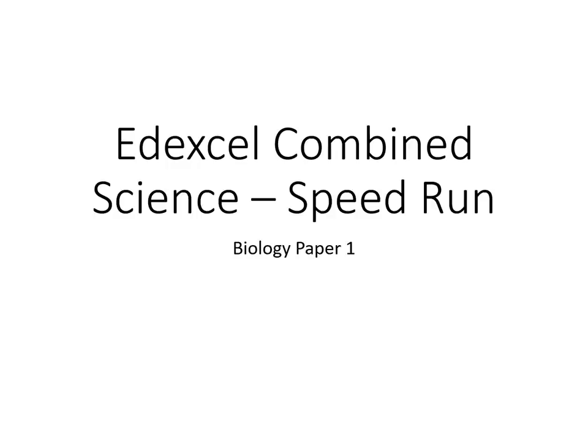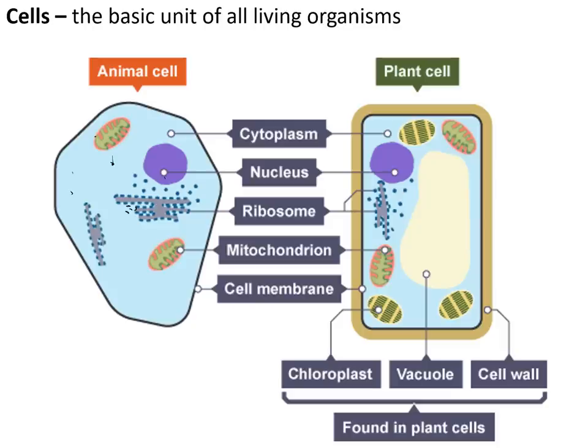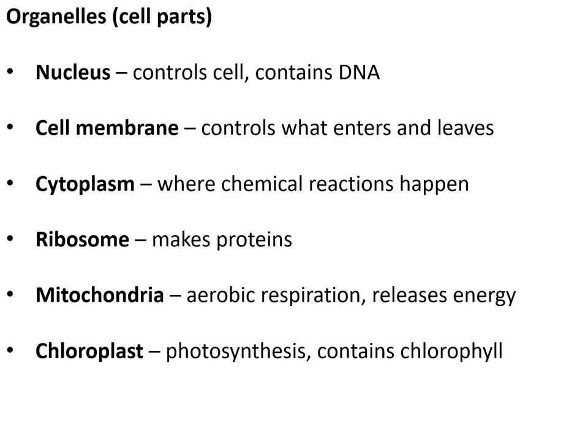Welcome to my Edexcel Combined Science Biology Paper 1 speed run, designed for a final boost just before the exam. Topic one: key concept. Cells are the basic unit of all living organisms. Animal cells and plant cells all contain cytoplasm, nucleus, ribosomes, mitochondria, and cell membrane. Plant cells also contain vacuoles, chloroplasts, and a cell wall.